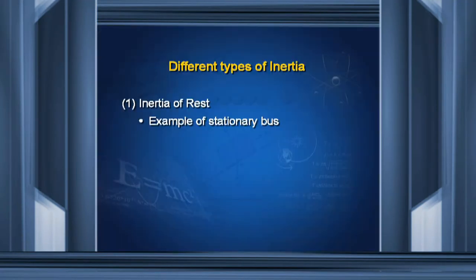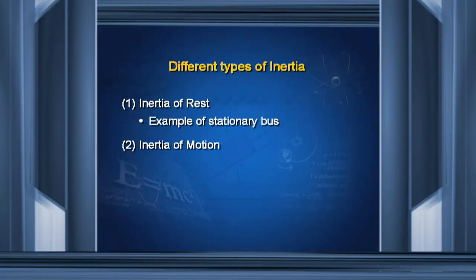Inertia of rest states that if an object is at rest, it remains at rest. For example, if you are sitting in a bus and the driver suddenly moves the bus, your lower body, being in contact with the bus, remains at rest initially. The upper body also remains at rest while the bus moves forward, so the upper body lags behind and you move in the backward direction.